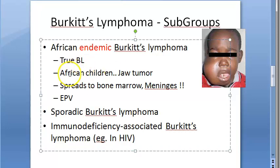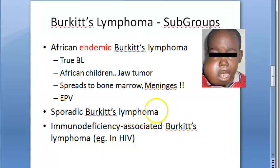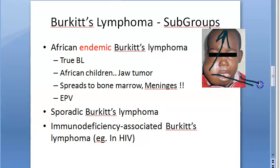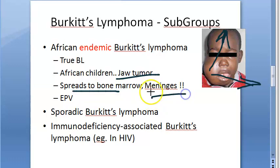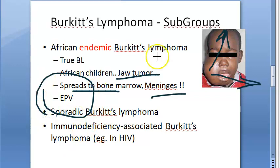In the African endemic type, African children present with a jaw tumor which can spread to the bone marrow and even the meninges. These are extranodal sites — it can spread to the bone marrow and meninges. This type is usually caused by Epstein-Barr virus.